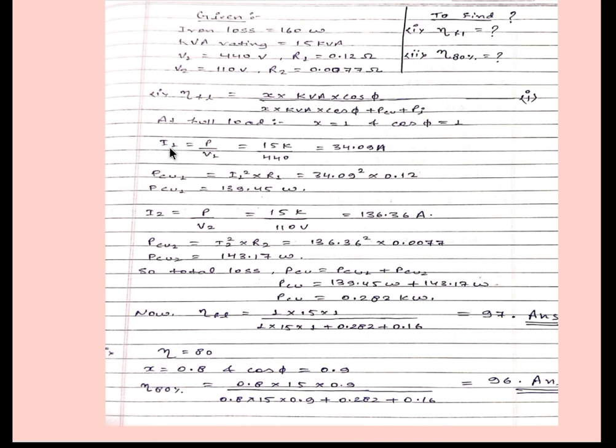We can find I1 by our simple formula P by V1, we will get 34.09 ampere. After this we can find out copper loss Pcu1 by I1 square into R1, so it will be 139.45 watt. Similarly we can find out I2.